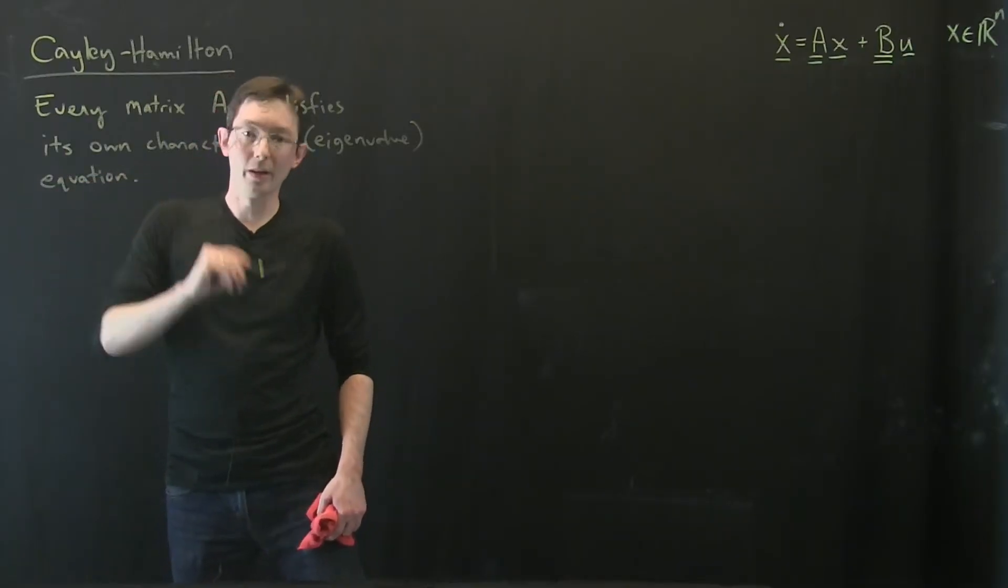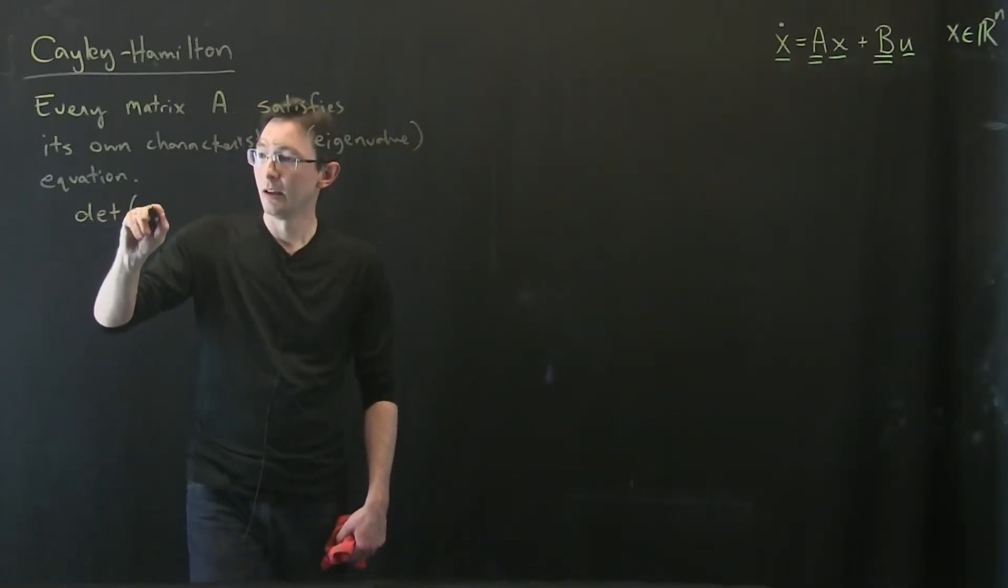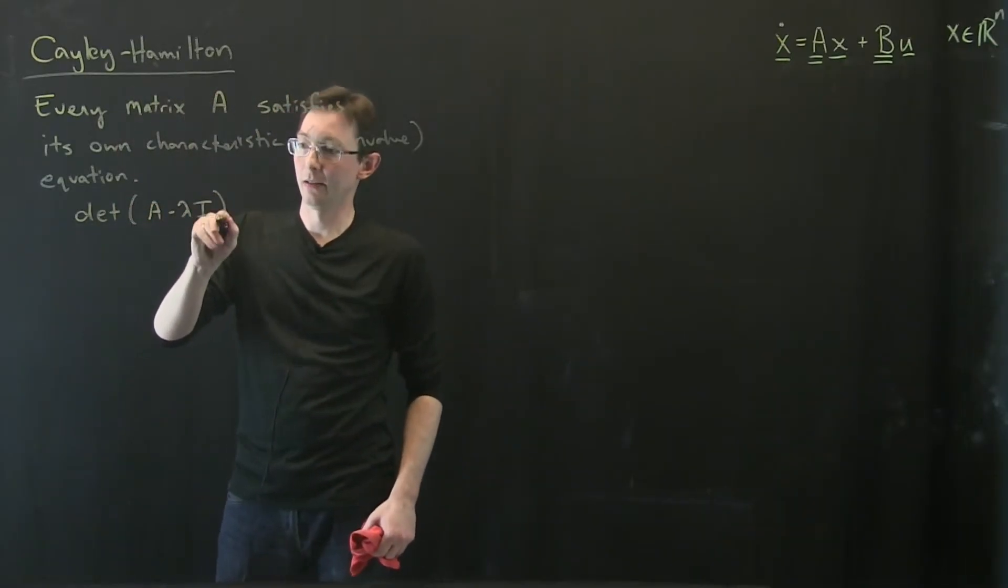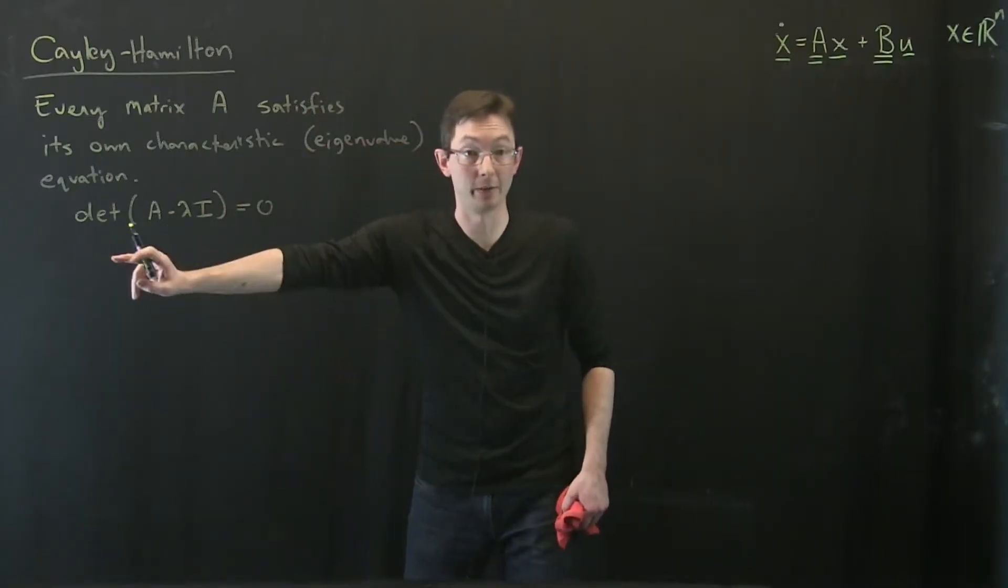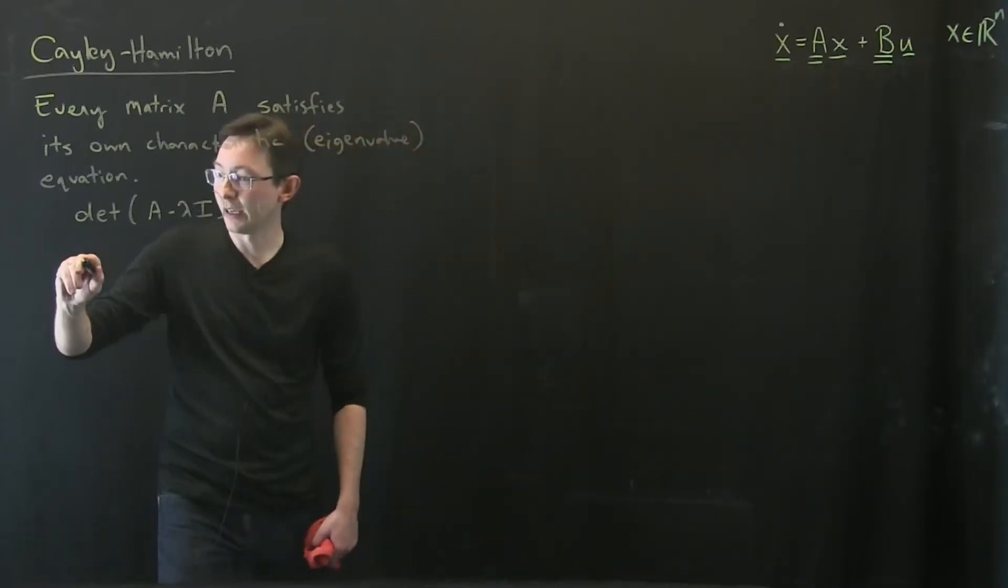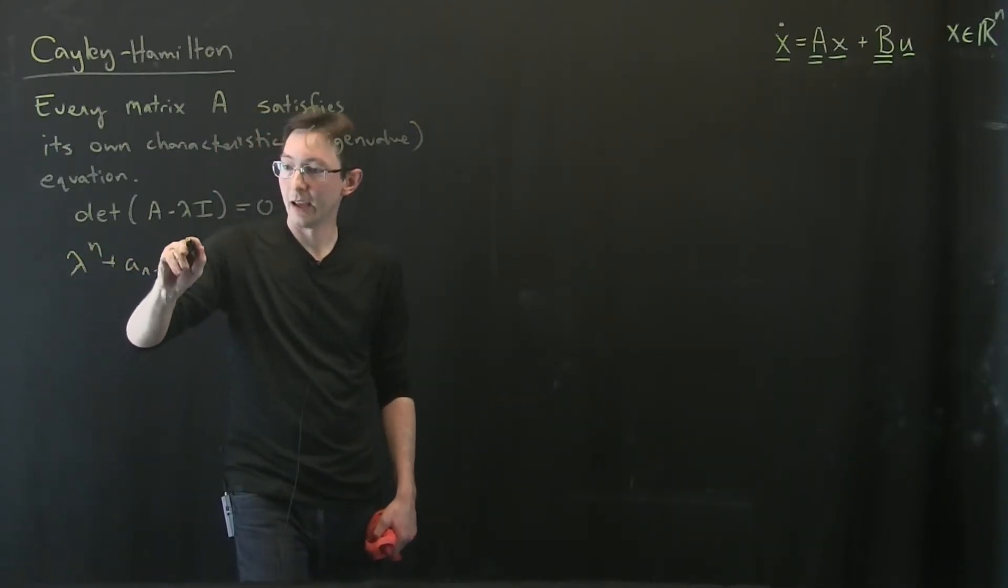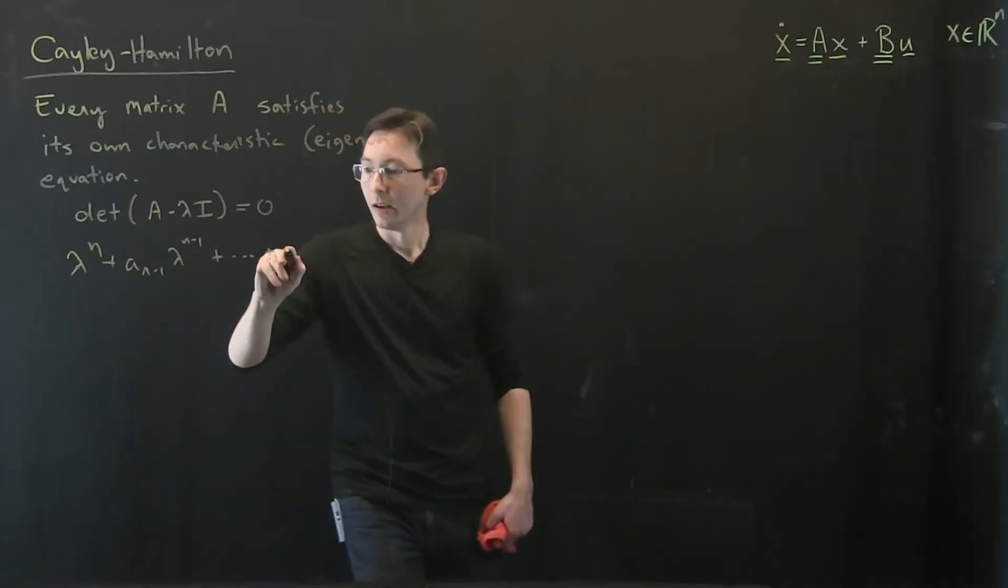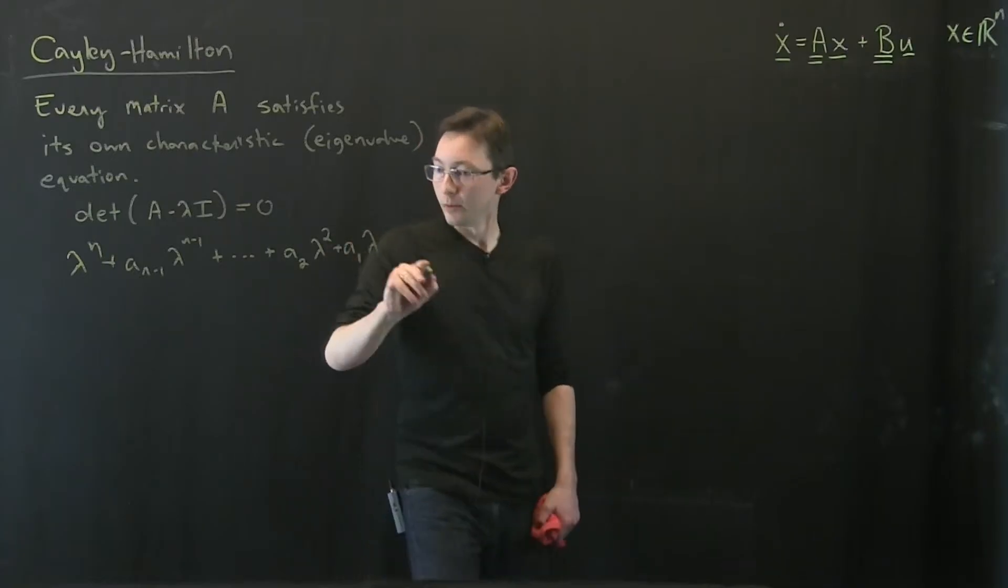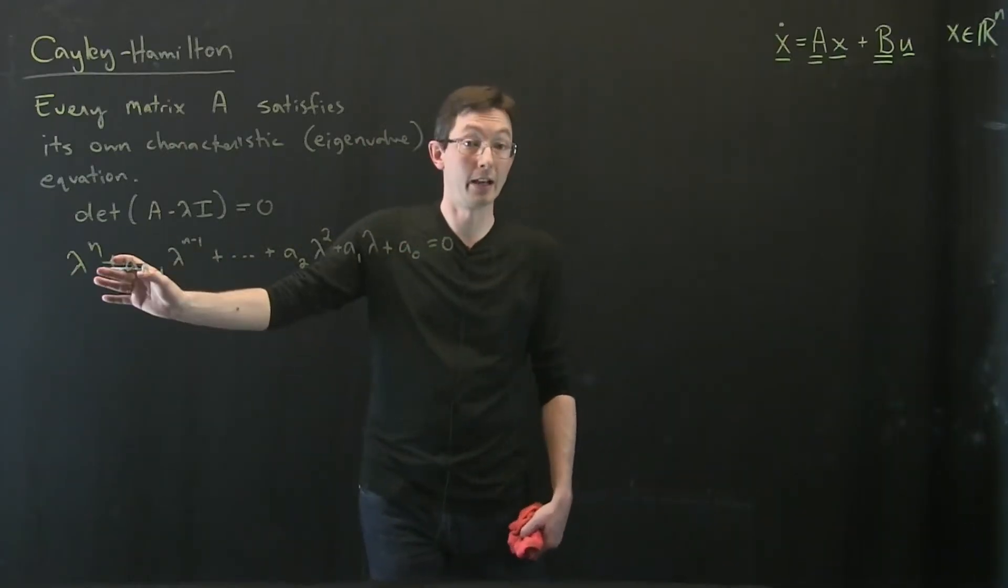So what do I mean by that? Well, if I take the equation determinant of A minus lambda I equals zero, this is the eigenvalue equation. This is only true for special numbers lambda that are eigenvalues of A. If I take this equation, let's say it is lambda to the n plus a_{n-1} lambda to the n minus 1 plus dot dot dot plus a_2 lambda squared plus a_1 lambda plus a_0 equals zero. Let's say this is the characteristic polynomial, the roots of which are eigenvalues of the A matrix.